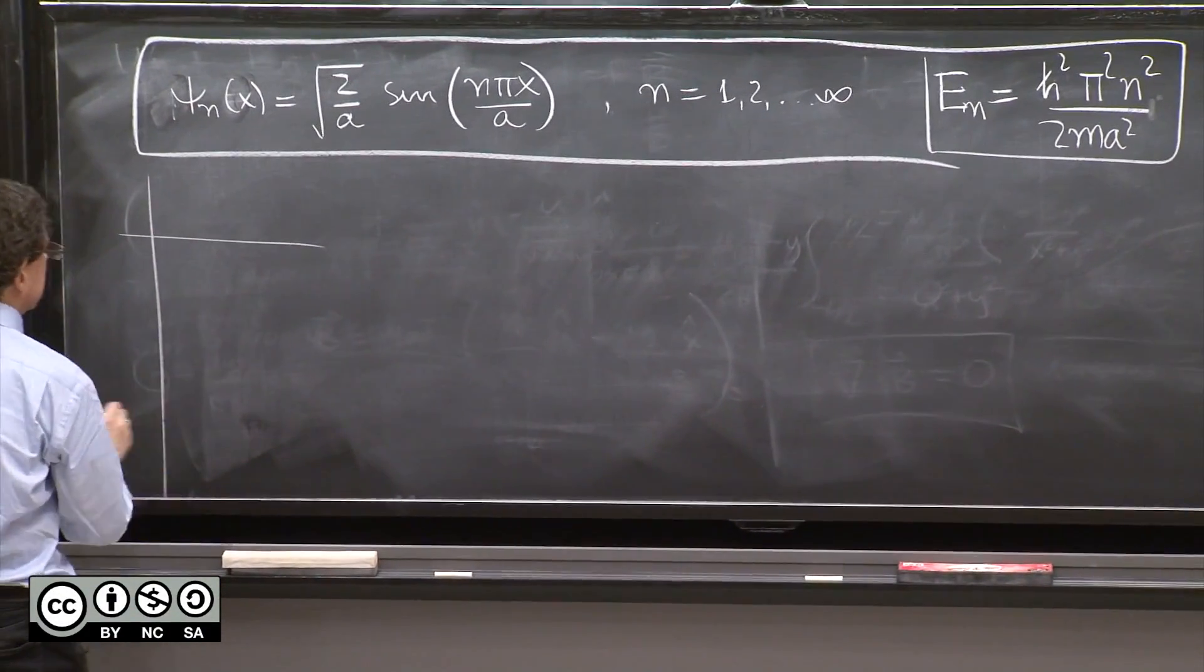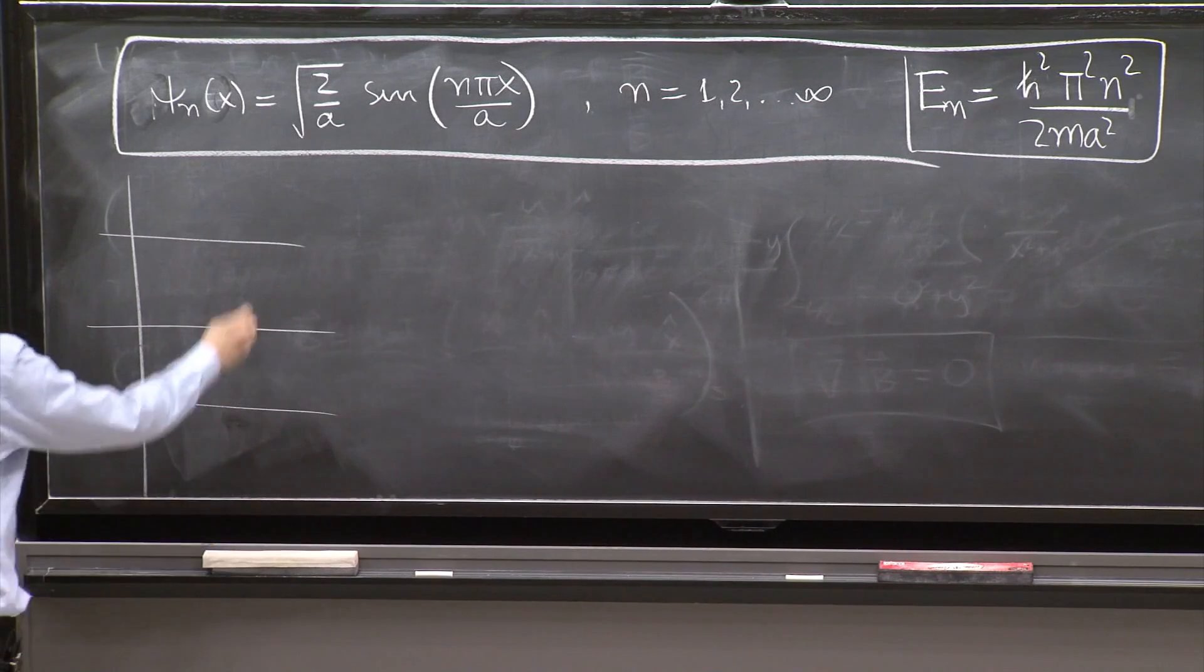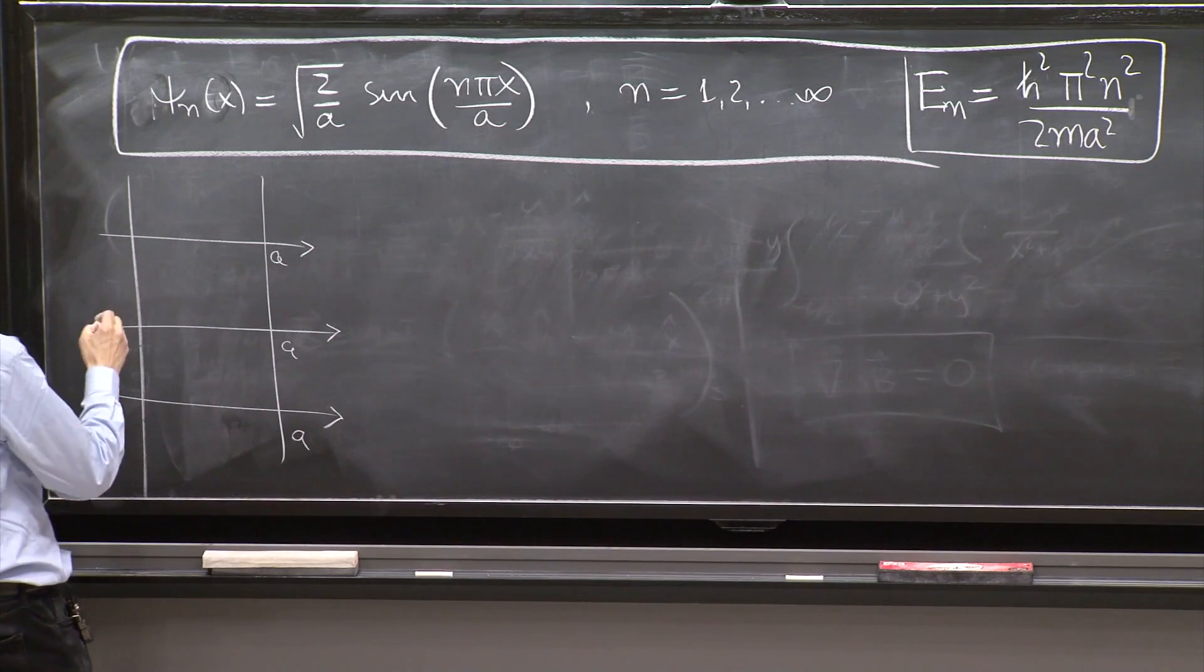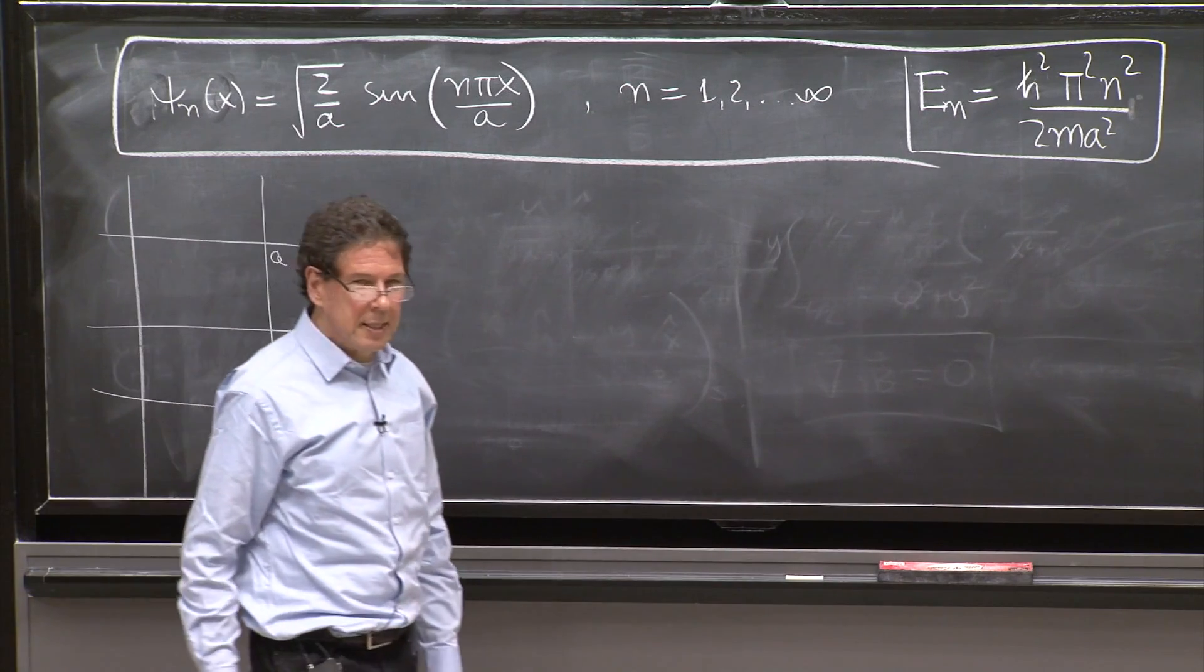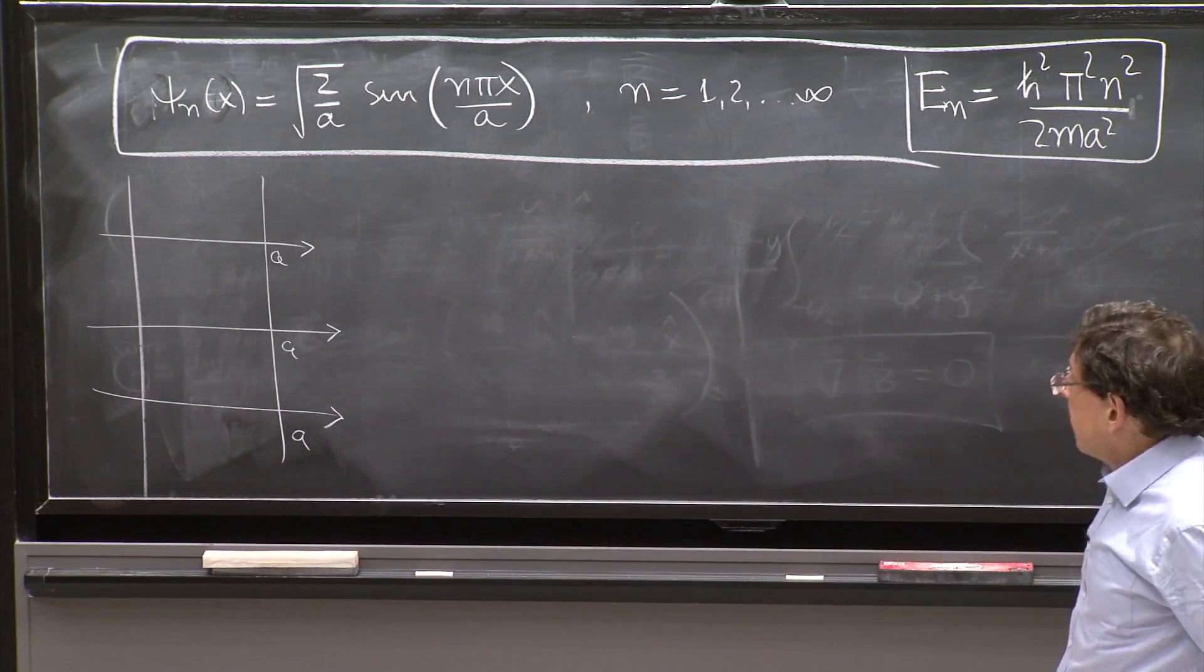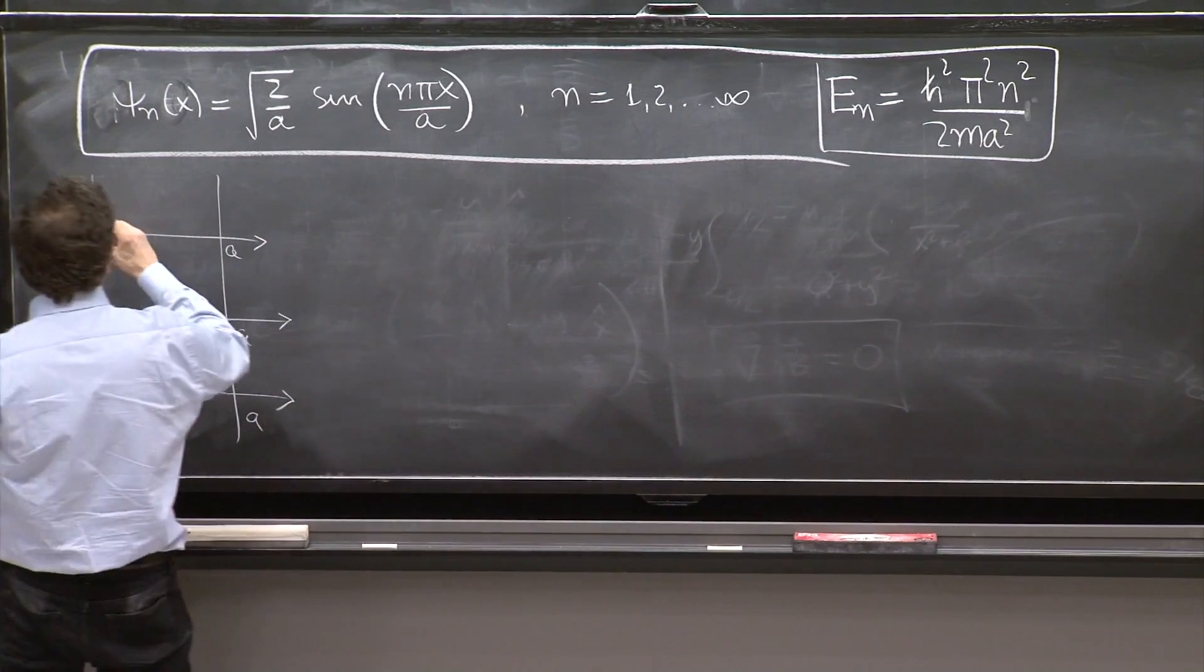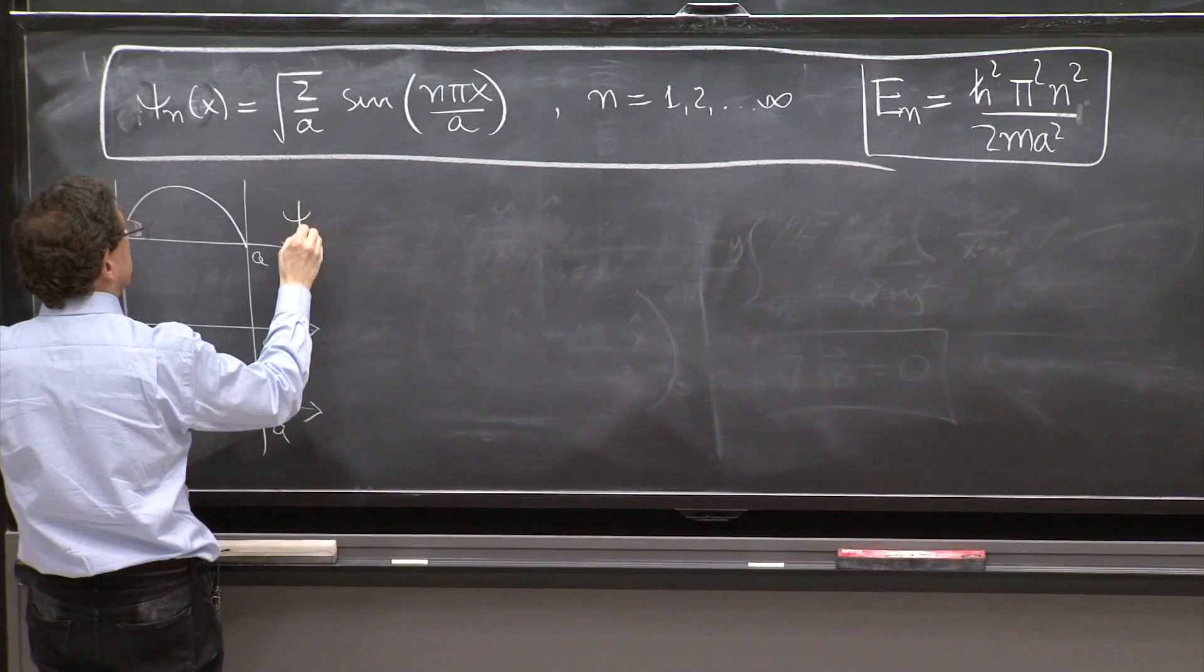So here is x, and here is a. Various copies of the x-axis. For the ground state, what is the lowest energy state? It's not zero energy because n begins with 1. So it's this. The lowest energy state is a sine, so the wave function looks like this. This corresponds to ψ₁, or n equals 1.